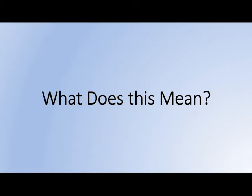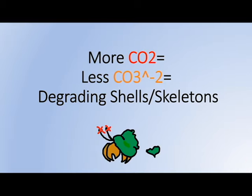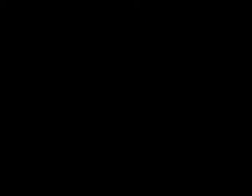The production of carbonic acid decreases the availability of carbonate, which is essential to many organisms when making their shells and skeletons. Carbonic acid corrodes their shells, causing organisms like snails and shellfish to die. Here's a shell before being left in acidic water — see how the shell degrades over time. Look at day 45: by this time, the organism is dead. This is the issue our oceans are facing.